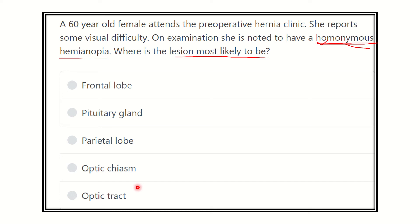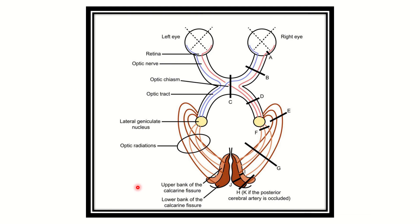To understand this, we need to look at the visual pathway. Here we can see the normal visual pathway with the right eye and left eye. Light is focused on the retina, and from the retina the optic nerve is formed. Then comes the optic chiasm, then the optic tract on both sides, then the lateral geniculate body, then optic radiation on both sides, and finally it reaches the occipital cortex.